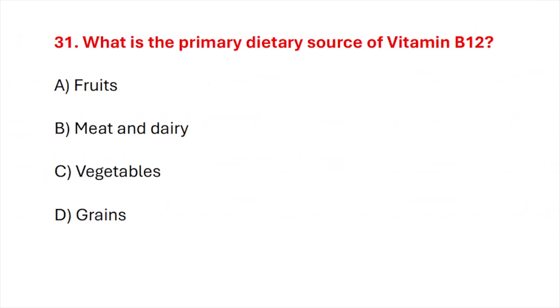Question number 31. What is the primary dietary source of vitamin B12? Correct answer is option B: Meat and dairy.